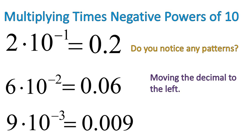We're not looking at the number of zeros, but how far we move the decimal one way or another. If the exponent is negative, we're shifting the decimal to the left and making the number smaller. If the exponent is positive, then we're shifting the decimal to the right and making the number larger.